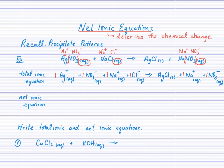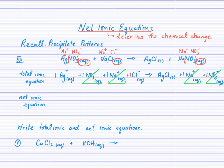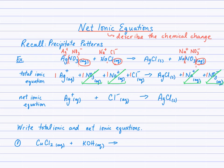That's the total ionic equation. Now look for spectator ions — ions that appear identical on both the left and right sides. Scanning through: 1 sodium ion AQ on the left and 1 sodium ion AQ on the right; 1 nitrate ion AQ on each side. So sodium and nitrate are the spectator ions. To write the net ionic equation, we cancel the spectator ions, and copy down what's left: the silver ion and chloride ion forming silver chloride solid. The net ionic equation describes the actual chemical change — in this case, the formation of a precipitate.